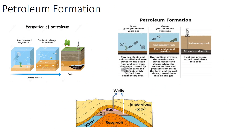Petroleum is a fossil fuel, like coal, but its formation is different. Petroleum is a thick, flammable, yellow-to-black mixture of gaseous, liquid, and solid hydrocarbons that occur naturally beneath the earth's surface. It is believed to be formed from the remains of sea creatures covered by sand and sediment over millions of years ago. Large quantities of dead organisms, usually zooplankton and algae, are buried underneath sedimentary rocks and subjected to both intense heat and pressure in the absence of oxygen.